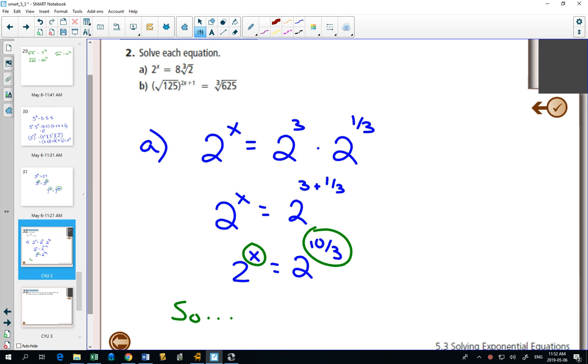And this is where we get to go. So now that we have that, what could x possibly be? x is 10 thirds.